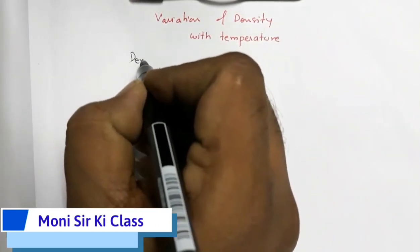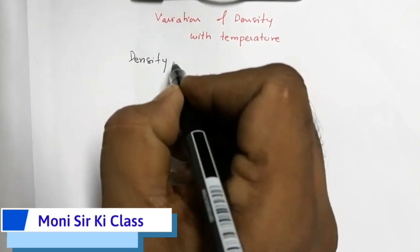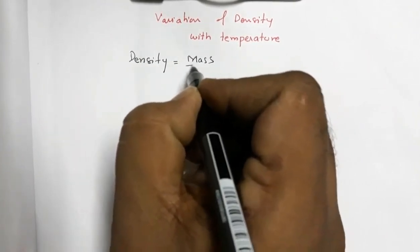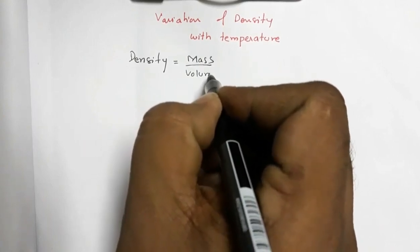As we know that density, it is defined by the relation density is equal to mass by volume. It is mass per unit volume.